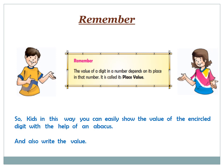In this slide, two students are representing a remember box. The girl is Anushka and the boy is Anki. Both of them are indicating a remember box. Let us see what is written in the remember box. The value of a digit in a number depends on its place in that number. It is called its place value.